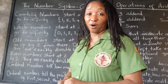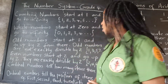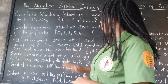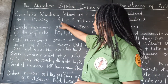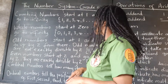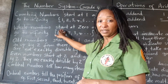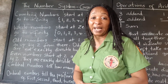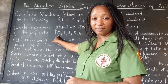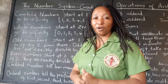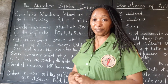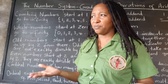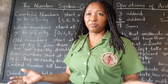Whole numbers start at zero and continue to infinity. All counting numbers are also whole numbers, but not all whole numbers are counting numbers. Can you look and tell me which of the whole numbers is not a counting number? The counting numbers are one, two, three, four, five continuing to infinity. The whole numbers are zero, one, two, three, four continuing to infinity. Zero is the only whole number that is not a counting number. You might be saying to yourself: zero means nothing.